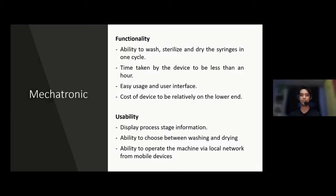Under functionality, there are three stages that have to be done in one cycle fully automated, and these are washing, sterilizing, and drying. There's also the requirement for one cycle to be completed in less than an hour, and also for the cost of the device to be relatively low. Under usability, the nurse has the display of the process stage information, the ability to choose between washing and drying, and also the ability to operate the machine via local network from any mobile device.